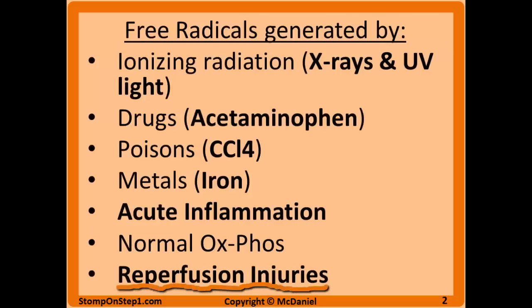Reperfusion following ischemia is another example of a process that generates free radicals. An ischemic tissue will have a bunch of inflammation which then meets the oxygen in the blood flow once flow is restored, and you end up with free radicals like superoxide being generated. This presents clinically as an MI patient who gets worse after treatment — you think opening up their vessels and getting blood to the heart would help, but it actually gets a little worse right after you start treating them because that blood brings oxygen which is turned into free radicals and causes more damage.